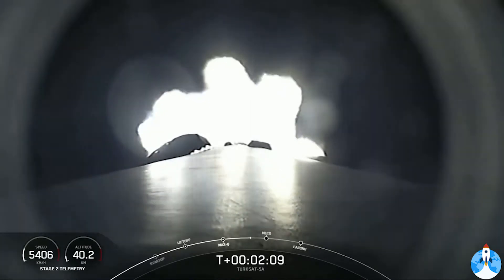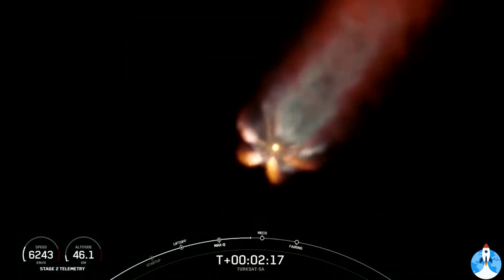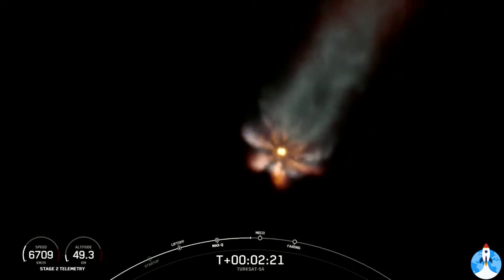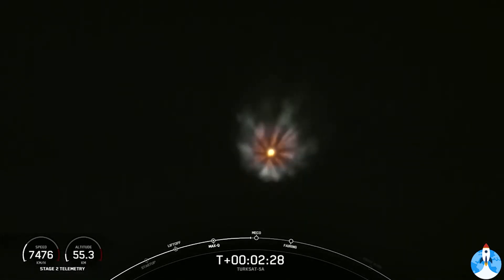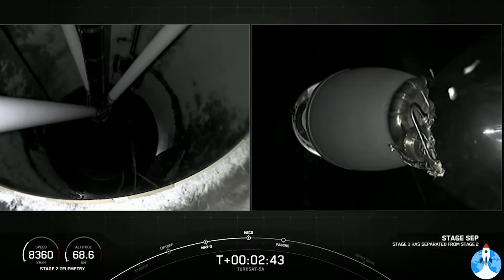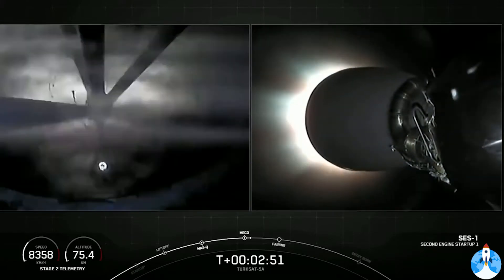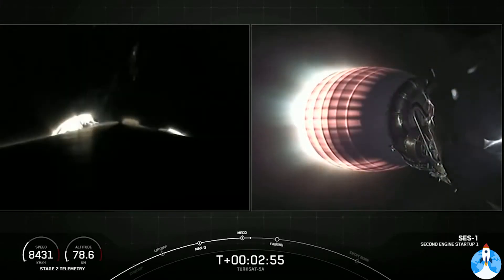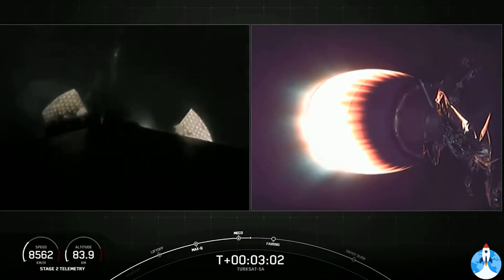About 15 seconds away from throttling down those Merlin 1D engines, you'll start to see that visual change and that plume you see on the screen. Main engine cutoff. Stage separation confirmed. All right, all good news here. We had a successful main engine cutoff, stage separation, and second engine start one.